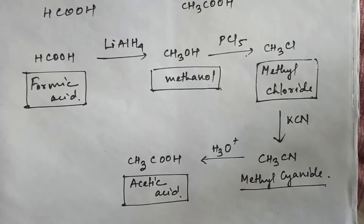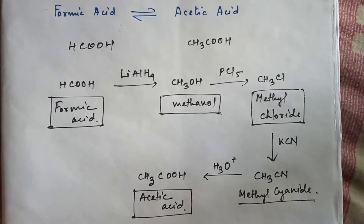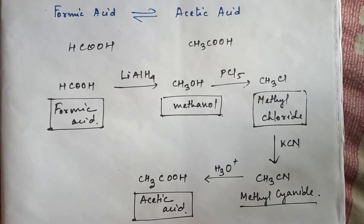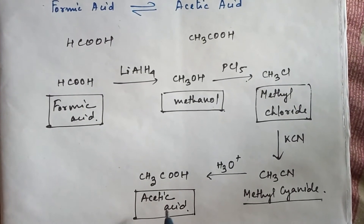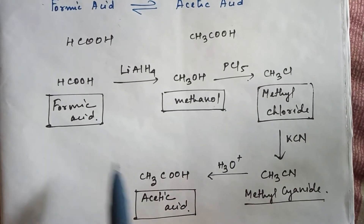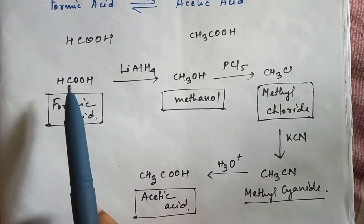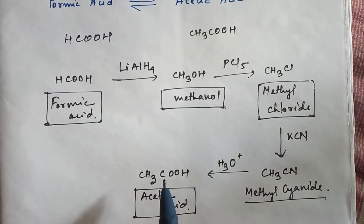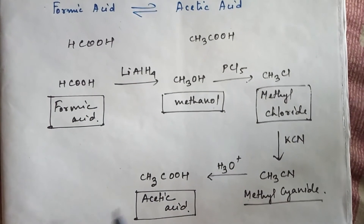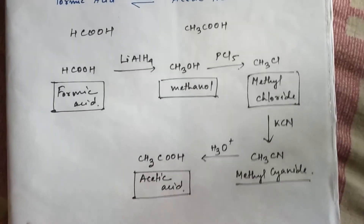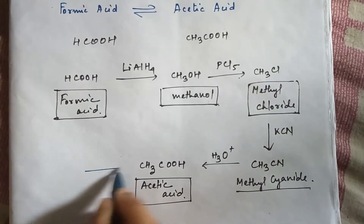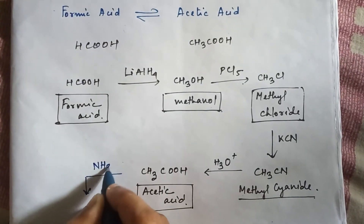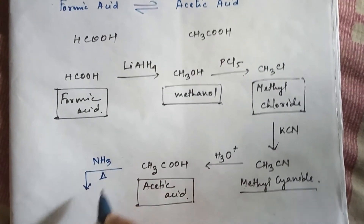Now let's do the reverse process — from acetic acid to formic acid. You can see that acetic acid has two carbon atoms and formic acid has only one carbon atom, so you have to remove one carbon atom. First, add ammonia and apply heat to acetic acid — you will get acetamide.